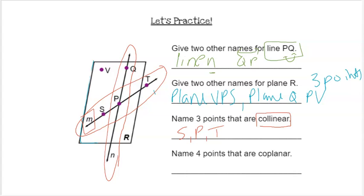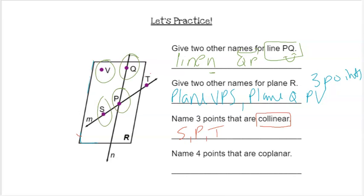And lastly, name four points that are coplanar. Remember, coplanar means existing on the same plane. Those are those four points we could have used to name the plane. So we have point V, Q, S, and P. Those all are points that are on the plane.